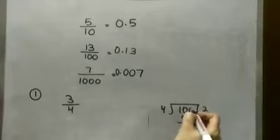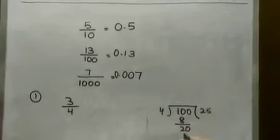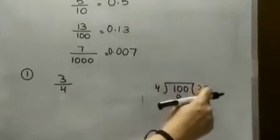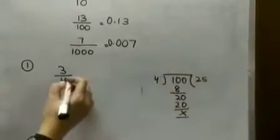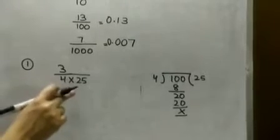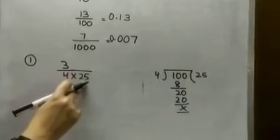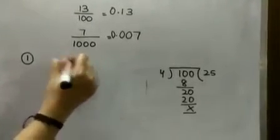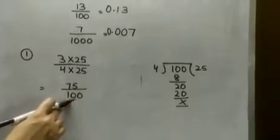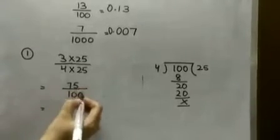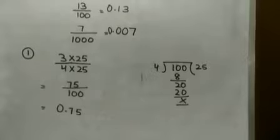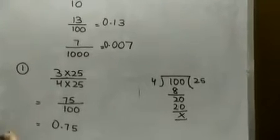Move to the next power of 10: 100. Now 4 — 5 fours are 20, remainder is 0. So 100 is totally divisible by 4, and the quotient is 25. So 25 is the number which when multiplied by 4 gives the denominator 100. But in a rational number we must also multiply the numerator by the same number. So 3 by 4 becomes 75 by 100. Now the denominator is a power of 10 with 2 zeros, so the decimal shifts 2 places from right to left: 0.75.